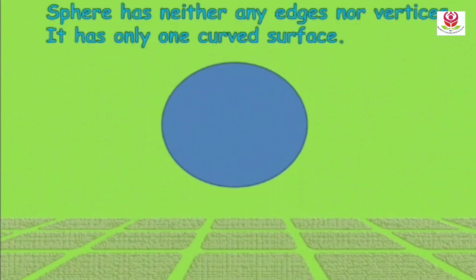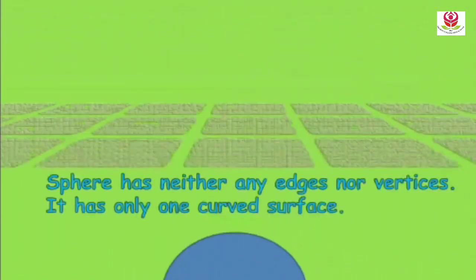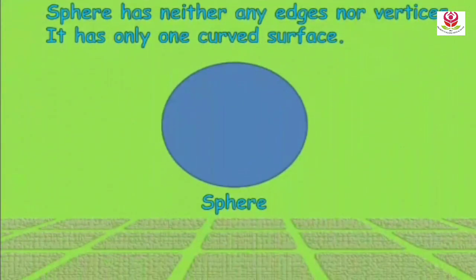Finally, the sphere. Sphere has neither any edges nor vertices — that is, sphere does not have any sides or edges, and no vertices or corners. It has only one curved surface which occupies space.